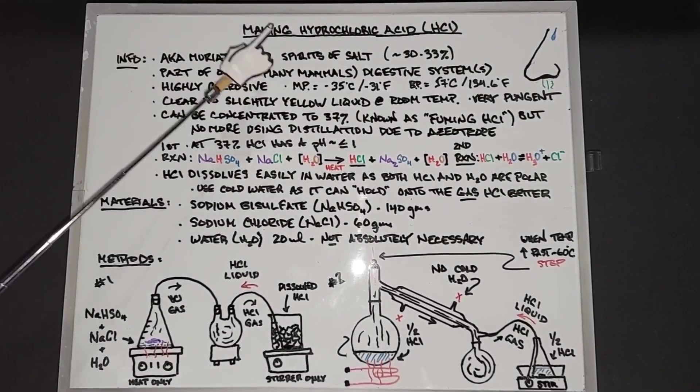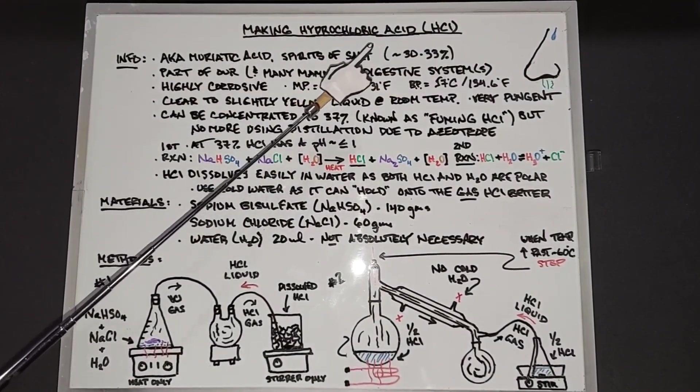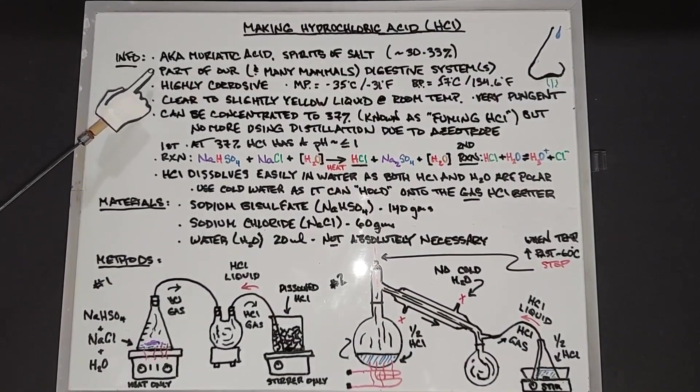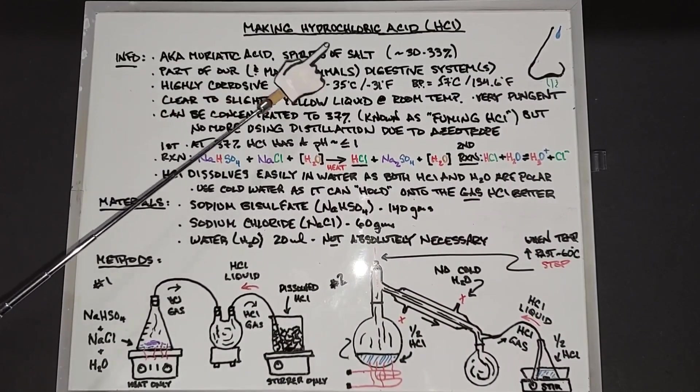In this video we're going to look at making some hydrochloric acid and concentrating it. A little bit of information about this hydrochloric acid, also known as muriatic acid or spirits of salt.